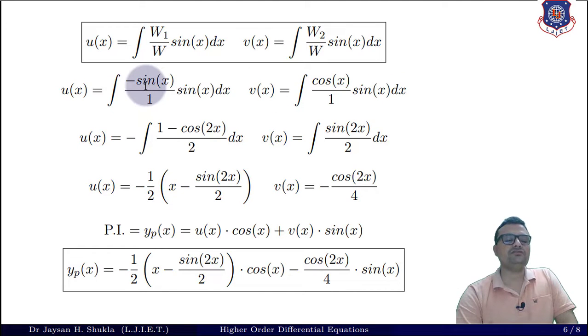Let us simplify this. So it gives me -sin(x)·sin(x), that is -sin²(x). Using the trigonometric formula of cos(2x), I can convert sin²(x) into (1 - cos(2x))/2. Over here it is cos·sin. Multiply and divide by 2, so in the numerator you will get 2cos(x)sin(x), which will eventually convert into sin(2x). So now we have to integrate these two values. Integrating this with respect to x gives me x - sin(2x)/2. Over here it is cos(2x)/2, and 2 is already in the denominator, so it gives me cos(2x)/4.